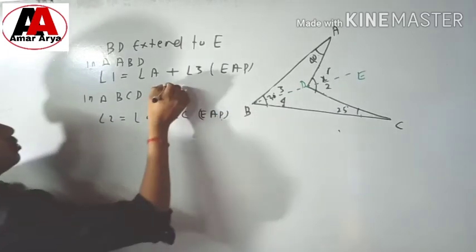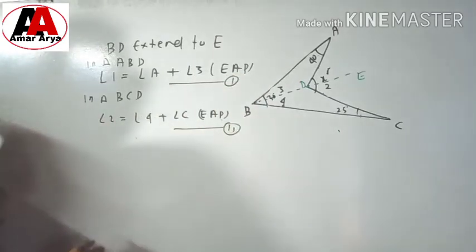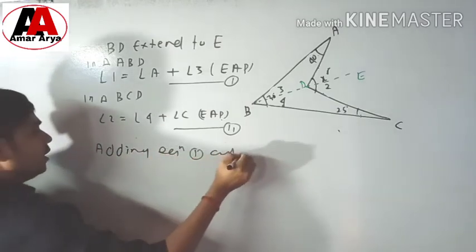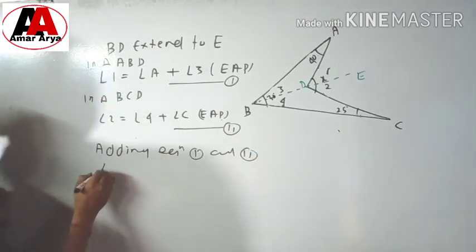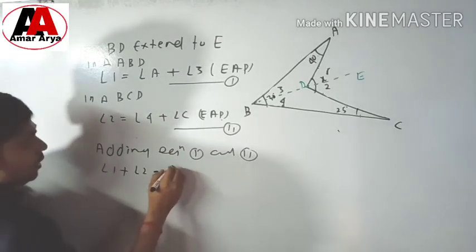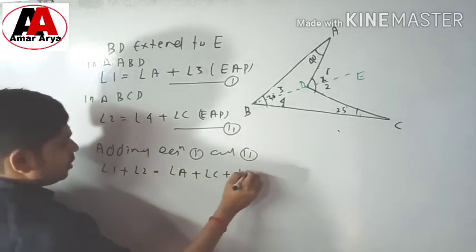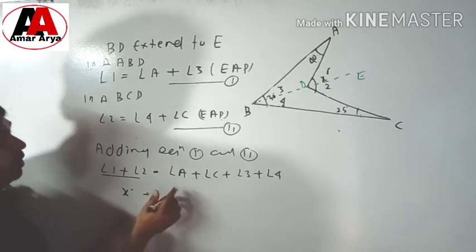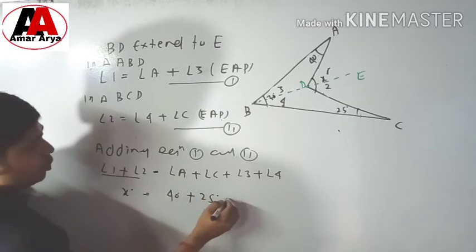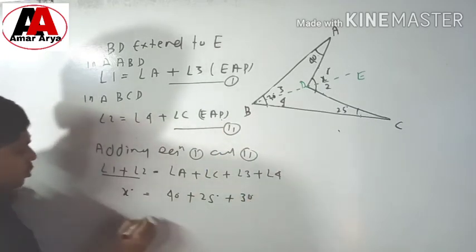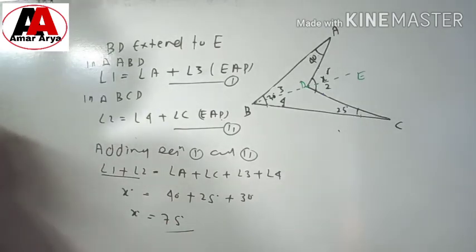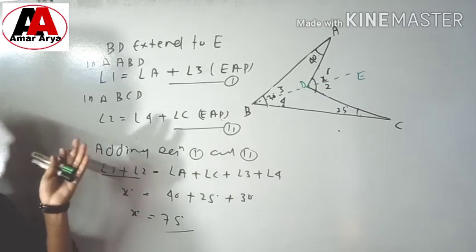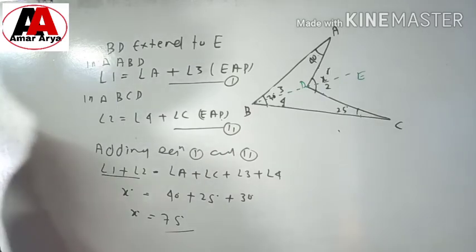This is equation 1 and this is equation 2. Adding equation 1 and equation 2: angle 1 plus angle 2 gives X degrees on the left side. On the right side we have angle A plus angle C, plus angle 3 plus angle 4. The value of A is 40 degrees, the value of C is 25 degrees, and the value of angle 3 plus angle 4 is 30 degrees. So the answer is 95 degrees — wait, that is 75 degrees. You will solve the question this way for two or three mark questions.